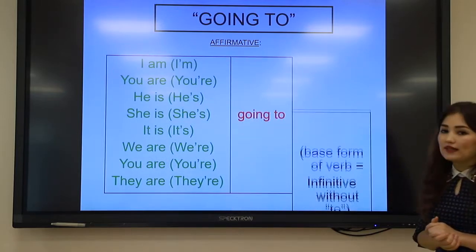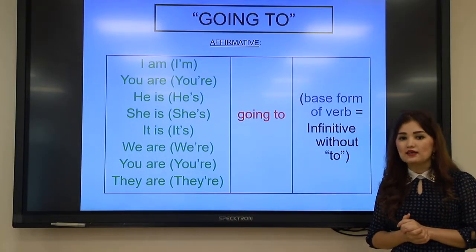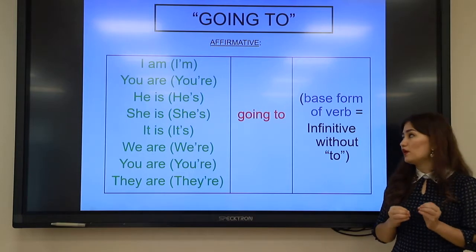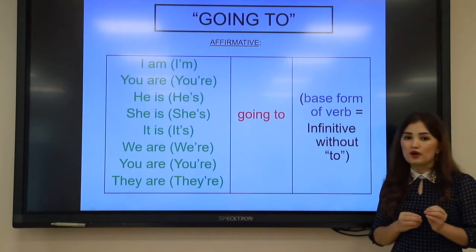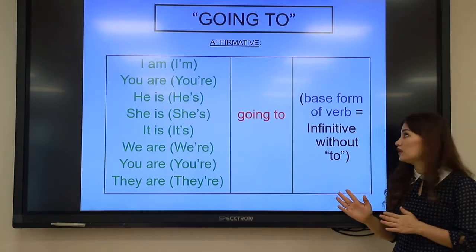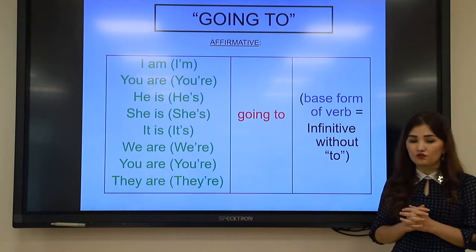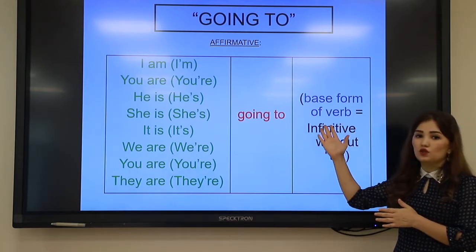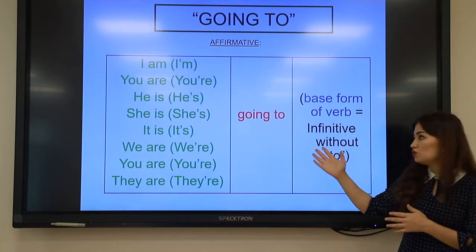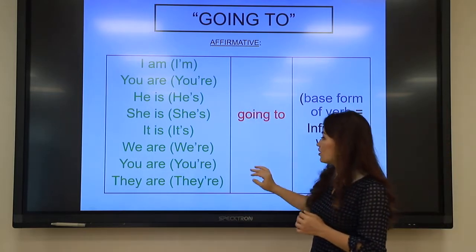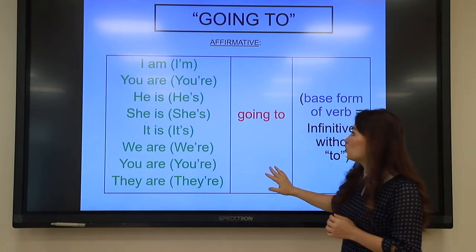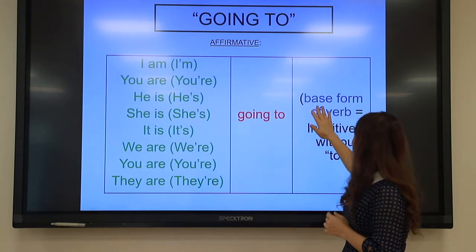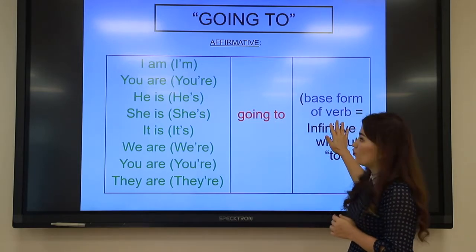The next form is 'to be going to.' As mentioned above, we are going to talk about two ways of expressing future simple. The second one is 'to be going to.' The affirmative structure is: I am going to + base form of the verb.